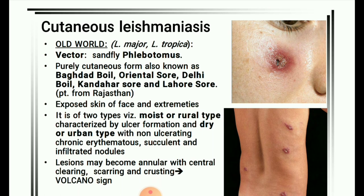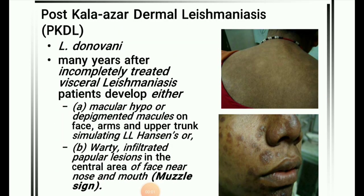Next image: Cutaneous leishmaniasis, caused by the vector sandfly Phlebotomus. The purely cutaneous form is also known as Baghdad boil, oriental sore, Delhi boil, Kandahar sore, and Lahore sore. It affects exposed skin of the face and extremities. There are two types: moist or rural type with ulcer formation, and dry or urban type with non-ulcerating chronic erythematous infiltrated nodules. Lesions may become annular with central clearing, scarring, and crusting — the volcano sign.